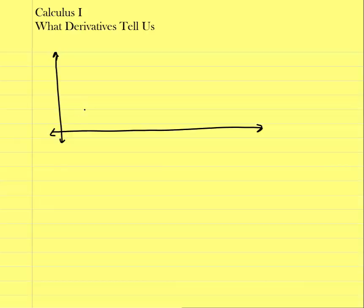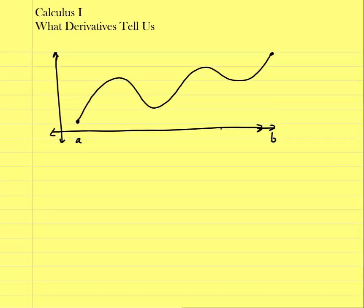For this particular graph, let's look at some important points. This is an endpoint and an endpoint here as well, and this is the interval from A to B — a closed interval with bracketed values. We'll call intermediate points C, D, E, and F. Important things are going on at these points: they're called relative max, relative min, relative max, and relative min.